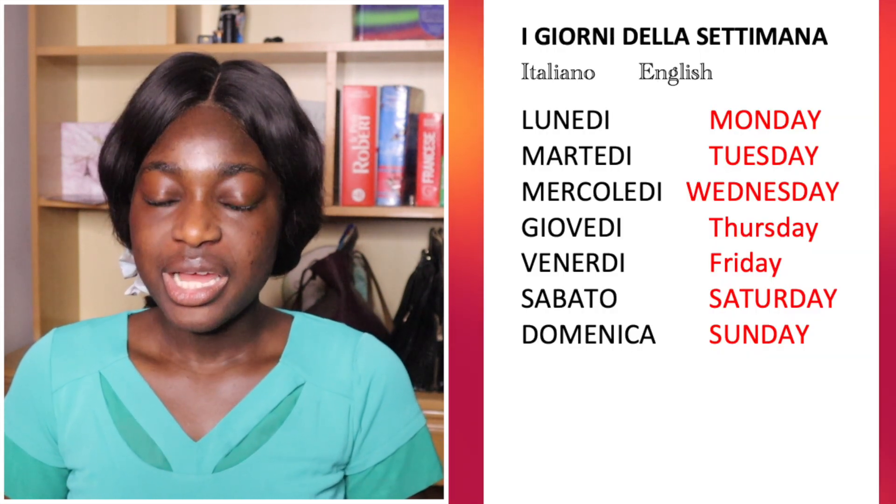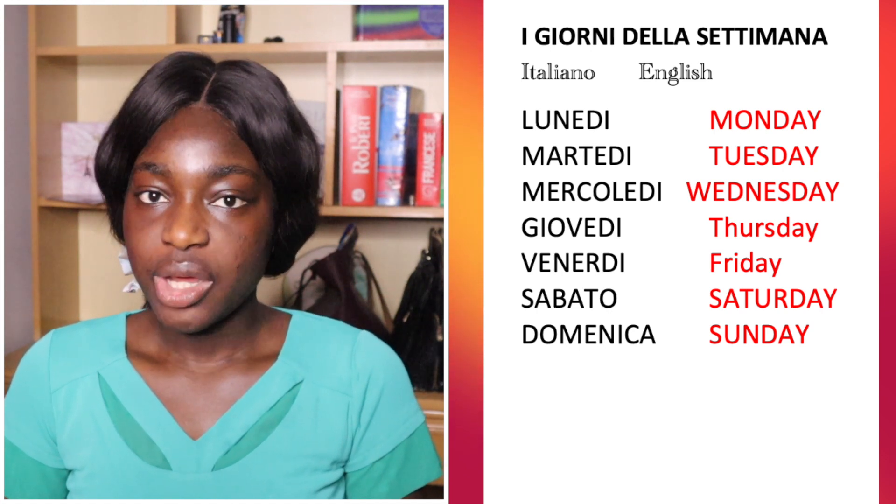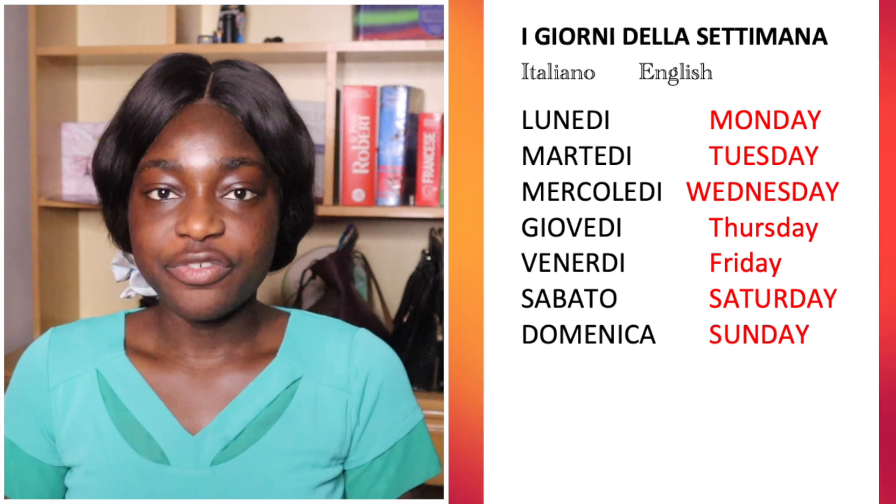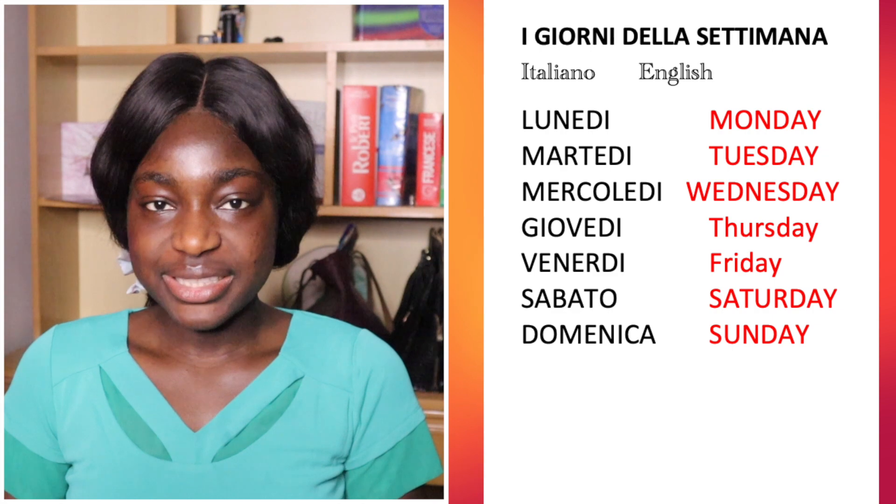Now days of the week — in Italian you say 'i giorni della settimana.' Lunedì, martedì, mercoledì, giovedì, venerdì, sabato e domenica. So: lunedì is Monday, martedì is Tuesday, mercoledì is Wednesday, giovedì is Thursday, venerdì is Friday, sabato is Saturday, domenica is Sunday. That single 'e' means 'and,' so sabato e domenica — Saturday and Sunday.